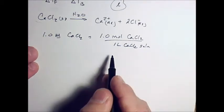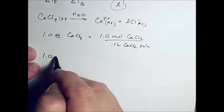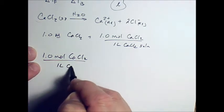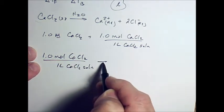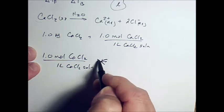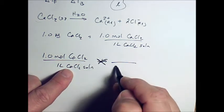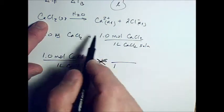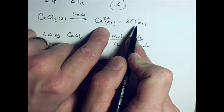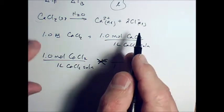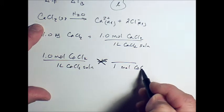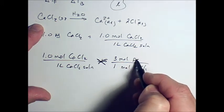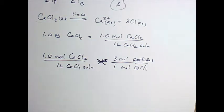Okay, well then, if I've got one mole of calcium chloride in one liter of calcium chloride solution, and I know that we can make a molar ratio out of this whole same idea here with the total number of particles, so I can say one mole of calcium chloride and three moles of particles, couldn't I? So what do I get?